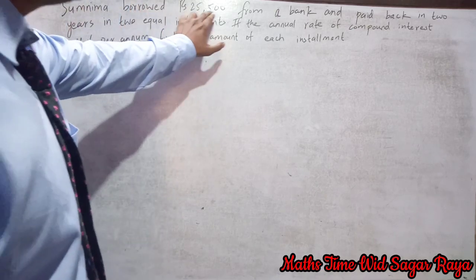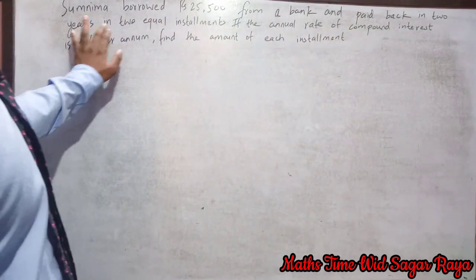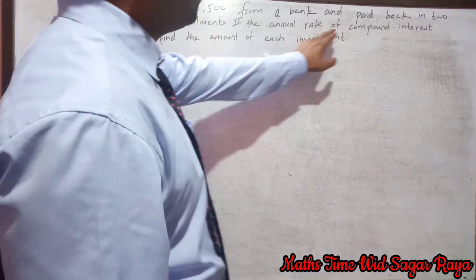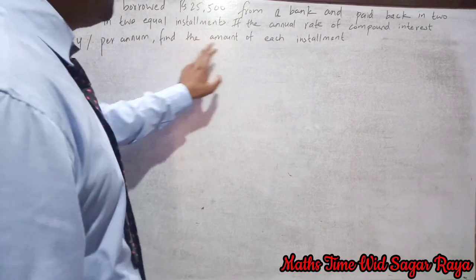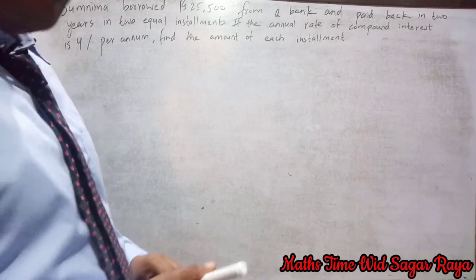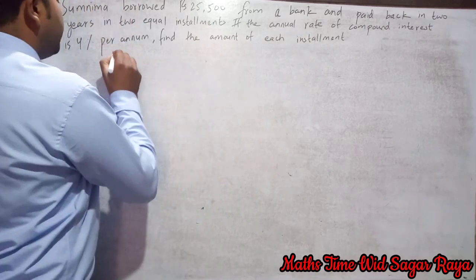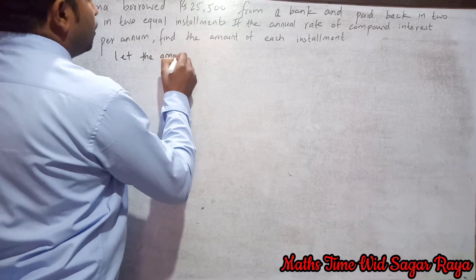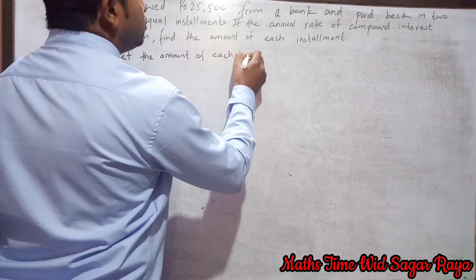Sumnima borrowed rupees 25500 from a bank and paid back in two years in two equal installments. If the annual rate of compound interest is four percent per annum, find the amount of each installment. So here we have to find the amount of each installment.